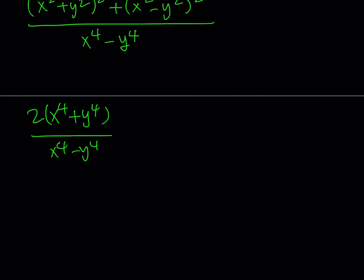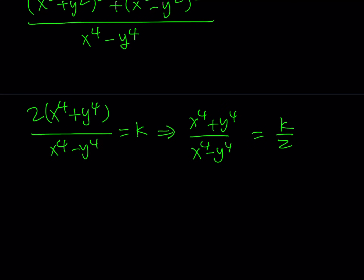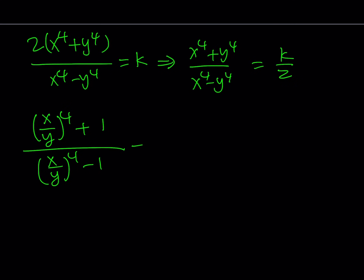So this whole expression equals k. From here, let's isolate x⁴ + y⁴ divided by x⁴ - y⁴, which gives us k over 2. At this point, I'd like to divide everything by y⁴. So we get: (x/y)⁴ + 1 divided by (x/y)⁴ - 1, equals k over 2.